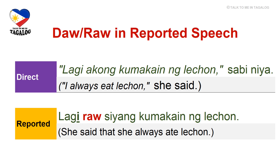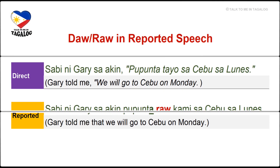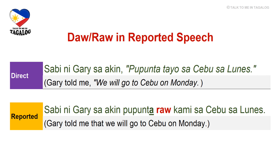Let's study the next sentence: 'Pupunta tayo sa Cebu sa Lunes,' sabi ni Gary sa akin. Sabi means 'told,' sa akin is 'to me,' pupunta is 'we'll go,' tayo is 'we,' sa Cebu means 'to Cebu,' and sa Lunes is 'on Monday.' This is direct speech. To convert to reported speech: Sabi ni Gary sa akin, pupunta raw kami sa Cebu sa Lunes — Gary told me that we will go to Cebu on Monday. Notice that raw is placed right after pupunta, the first word of the direct statement.